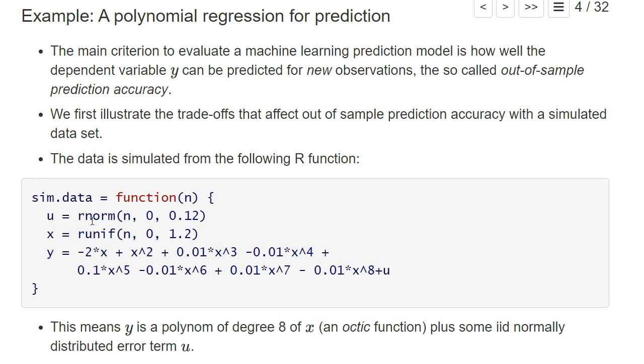The data will be simulated with the following R function called sim.data that takes as an argument a number of observations n. It first generates a variable u which is normally distributed with mean zero and standard deviation of 0.12. Then we have a variable x that is uniformly distributed between zero and 1.2. Then we compute the true value of the dependent variable y, which is a polynomial of x to the power 8, an octic function, plus this error term u.